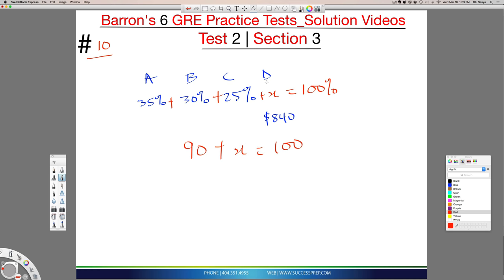So I pretty much have 90 plus X equal to 100. Remember, the X is the D, is the percentage for D. Well, obviously that means it's 10, because 90 plus 10 is 100. So that means that the D person is only receiving 10% of the inheritance.